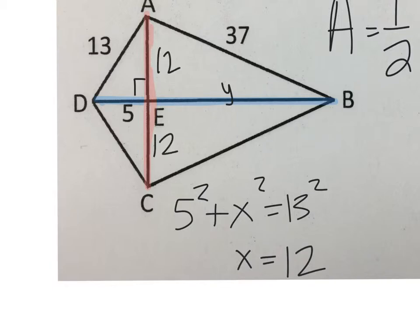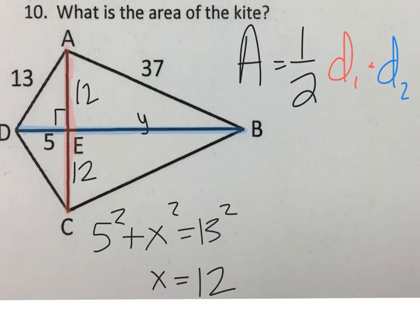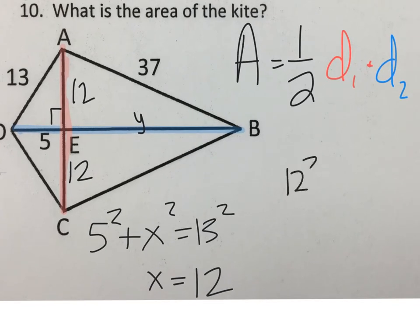This down here is also 12 because it's a kite and it gets bisected. So now I'm moving on to y. I can use Pythagoras now and say 12 squared plus y squared equals 37 squared, and solving this for y gives me a side length of 35.